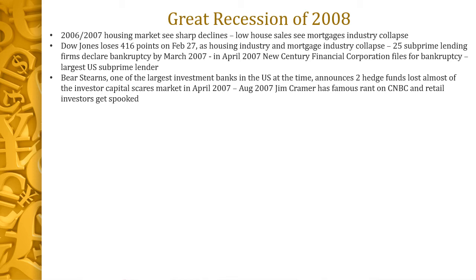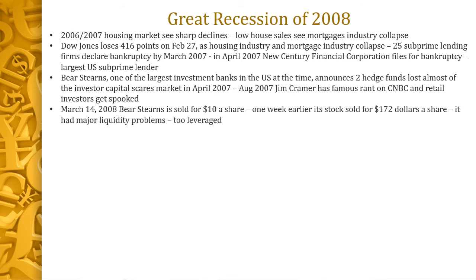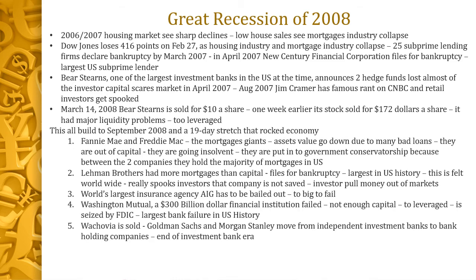Bear Stearns, which had this big problem in April 2007, was sold by March 2008 for $10 a share — originally it looked like it would go for $2 a share, but a week before it was sold that stock had been trading at $172 a share. The basic problem with Bear Stearns was liquidity: they had too many bad loans on the books, more bad loans than capital, and were too leveraged. Luckily they were purchased, but this led to a horrible 19-day stretch in September 2008.